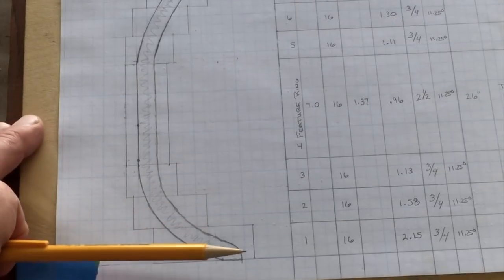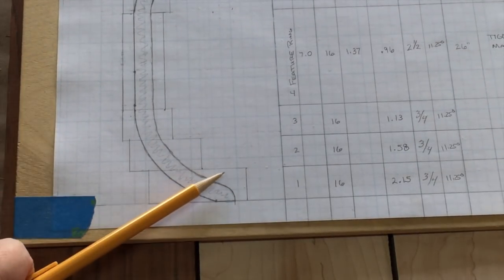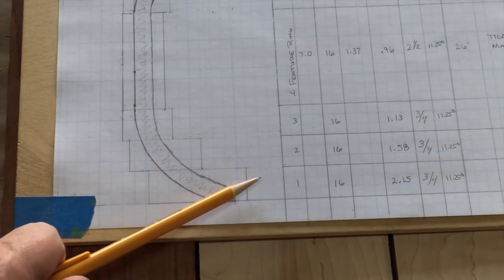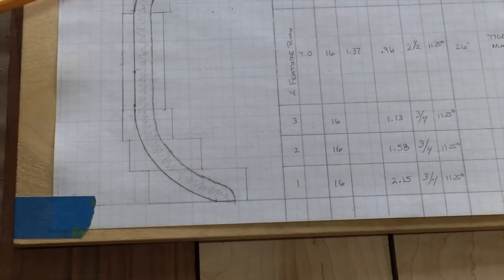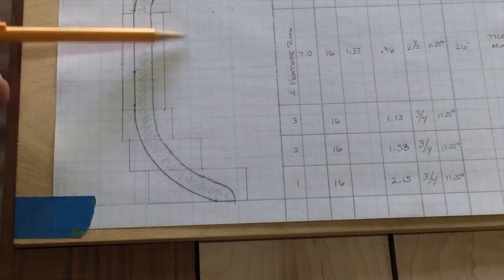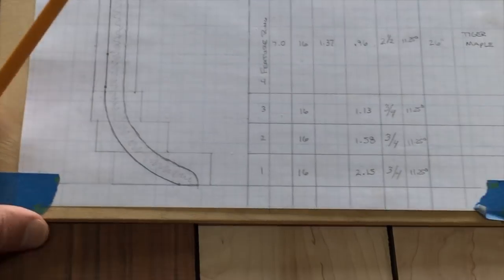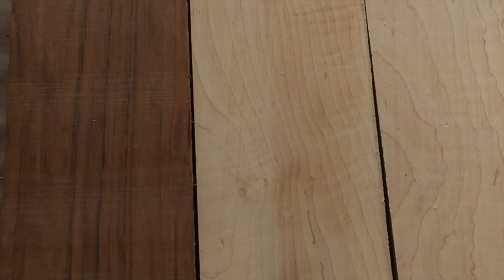Then I can go ahead and calculate the segment length and all the rest of the information that I need. I need to do some additional work down here. I'm going to put a floating disc and I'm thinking about putting some sort of accent wood between on either end of the feature ring.